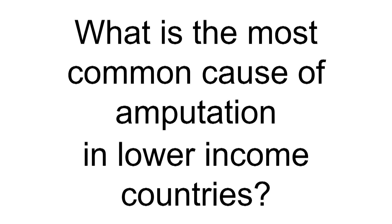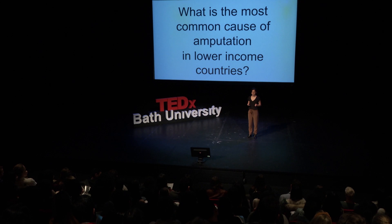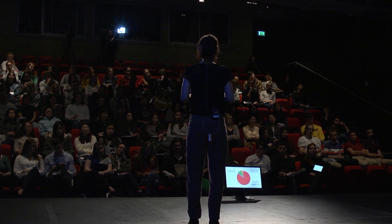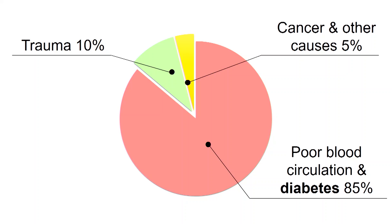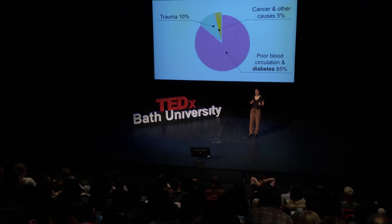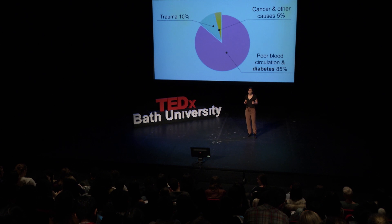What is the most common cause of amputation in lower income countries? The answer is very similar to before: trauma accounts a little bit more than in high income countries, but the big cause of amputation is still poor blood circulation and diabetes. Lower income countries are becoming richer, they have access to more food — and worse food — and are now facing the same problems we face in high income countries.